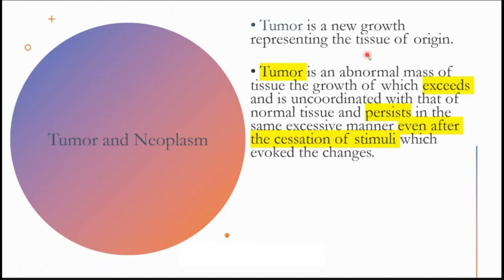A tumor is a new growth representing the tissue of origin. That is why whenever we say odontogenic tumor or epithelial tumor, odontogenic means arising from the tooth. So that tumor represents that particular origin — epithelial tumors are from epithelium. You can define it as an abnormal mass of tissue whose growth has exceeded and is uncoordinated with the normal tissue. There is normal cell division and proliferation happening, but this exceeds the normal tissue and it persists even after you remove the stimuli which caused this proliferation.